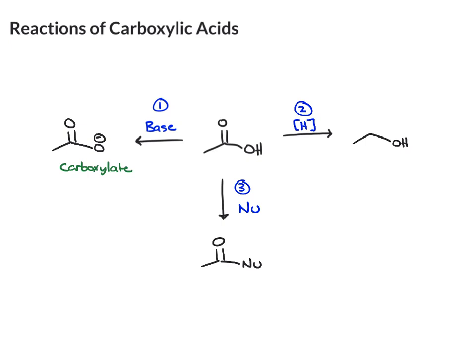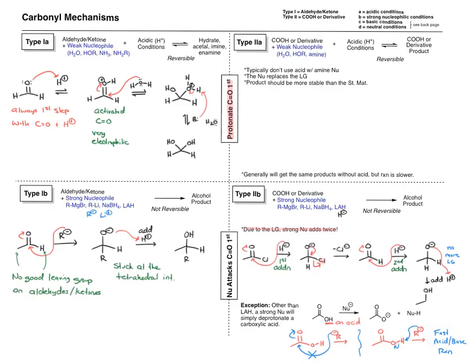This method here is going to be our big focus in the chapter — the different ways to do this. We're going to continue to fill in our chart by looking at the carboxylic acid and filling in the Type 2a mechanism, where we're doing it with the carboxylic acid. Later, we'll look at this again if you have a carboxylic acid derivative plus a weak nucleophile like water, an alcohol, or an amine, and acidic conditions.